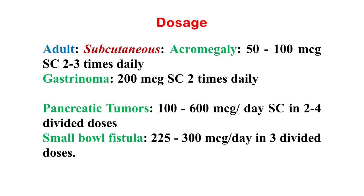Adopted dose in subcutaneous acromegaly: 50-100 micrograms subcutaneous 2-3 times daily. Dose in gastrinoma: 200 micrograms subcutaneous 2 times daily. Pancreatic tumors: 100-600 micrograms per day subcutaneous in 2-4 divided doses. Small bowel fistula: 225-300 micrograms per day in 3 divided doses.